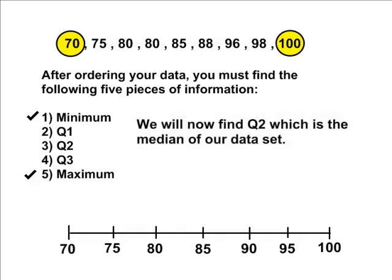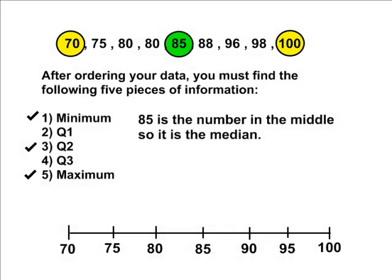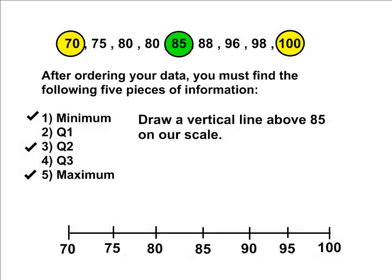After you have finished drawing your number scale, we need to find the five points which will define the boundaries of our four quartiles. The first point you should locate is Q2. Q2 is simply the median of the given data set. The middle number of our given data set is 85, so 85 is Q2. Locate 85 on your number scale and draw a thin vertical line directly above 85.